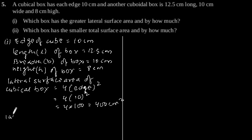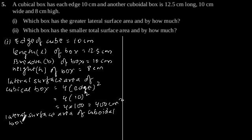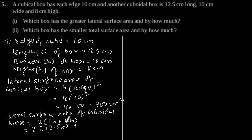Similarly, the lateral surface area of the cuboidal box is equal to 2 into (length into height plus breadth into height), which is equal to 2 into (12.5 into 8 plus 10 into 8), which gives 2 into 180, which is equal to 360 cm squared.